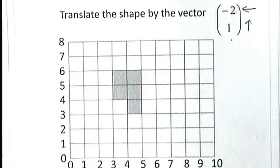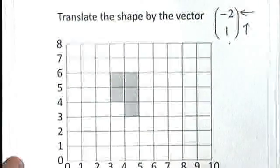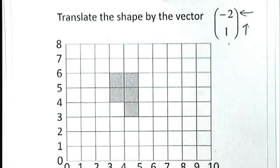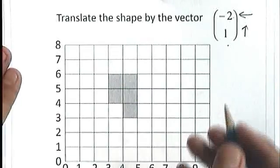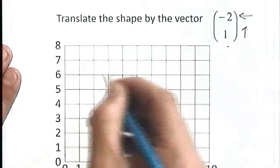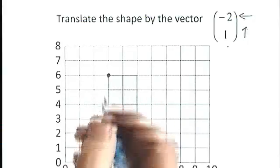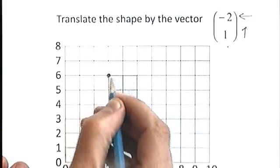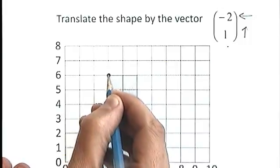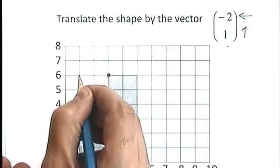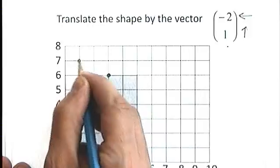Now this time I want to try to do it without the tracing paper. People quite often get this wrong if they try it without the tracing paper. But there is a fairly straightforward way that you can do it. You simply choose one of the corners of your shape. Put a little blob there. And what I'm going to do is I'm going to move that blob. Ignore the rest of the shape. I'm going to move that blob two spaces to the left and one space up. There it is.